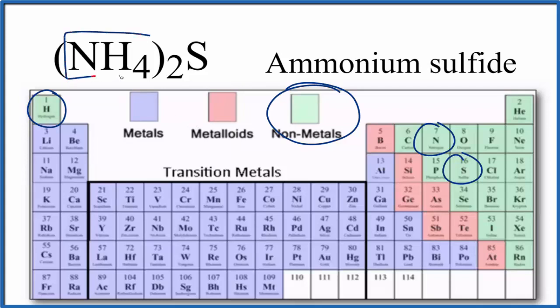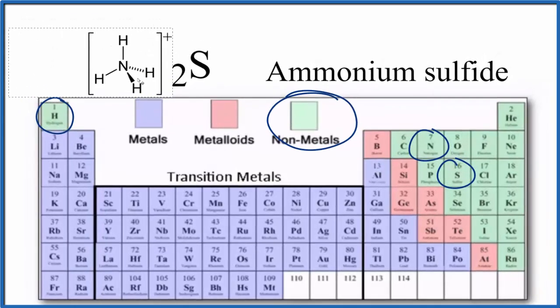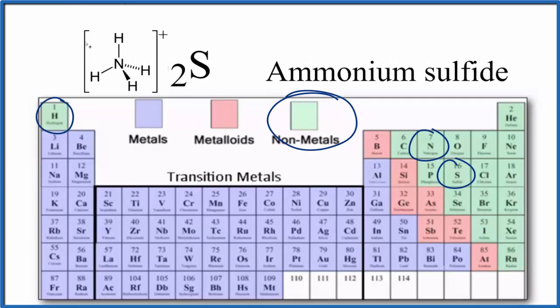NH₄, this is a polyatomic ion, and the whole thing has a 1 plus ionic charge. You can kind of think of it this way here. We have two of these ammonium ions. There's the N and the 4Hs, and the whole thing has this 1 plus ionic charge.